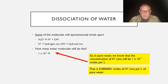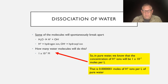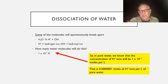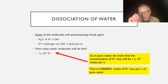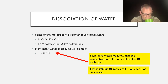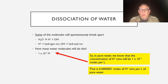So the concentration of hydrogen ions in pure water is 1 × 10⁻⁷ moles per liter. Written out, that's 0.0000001 — six zeros and then a one. It's a very small number. It doesn't matter how much water we have — we know the concentration of hydrogen ions is always 1 × 10⁻⁷.